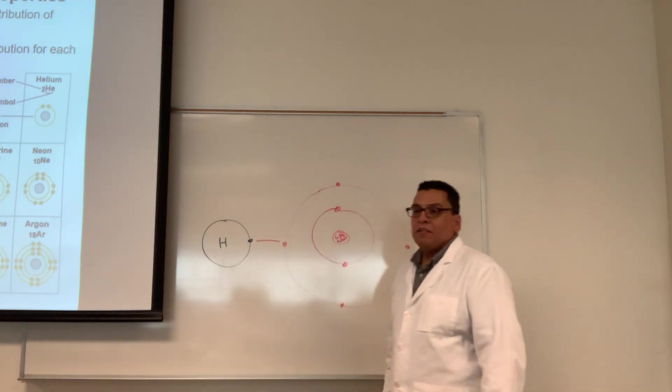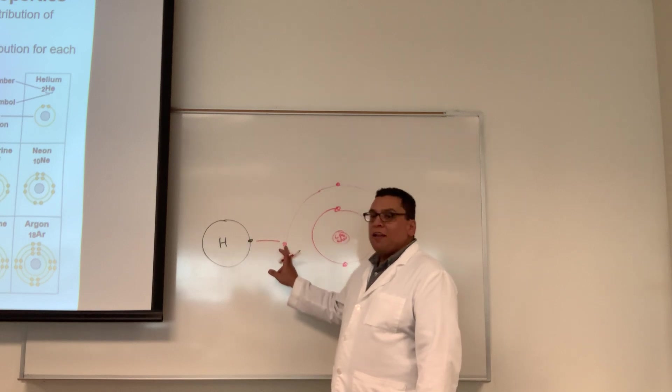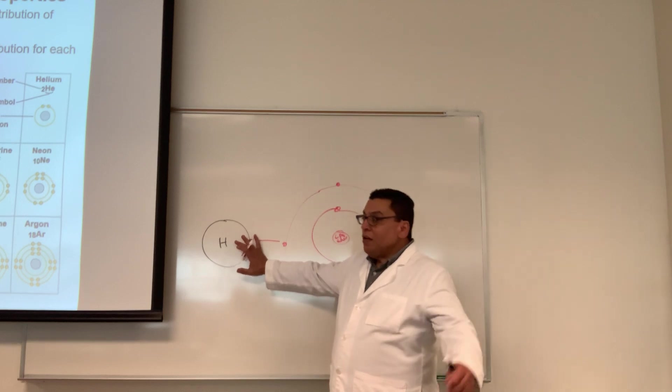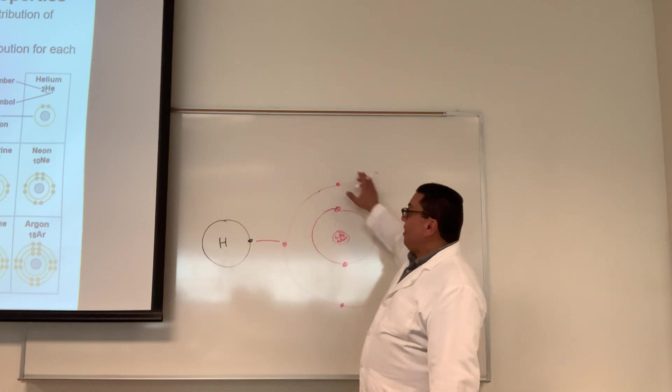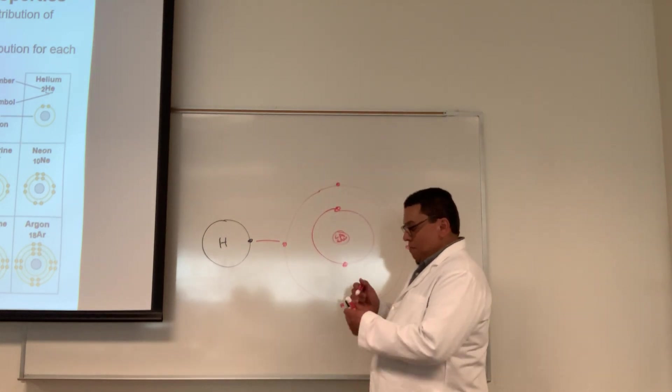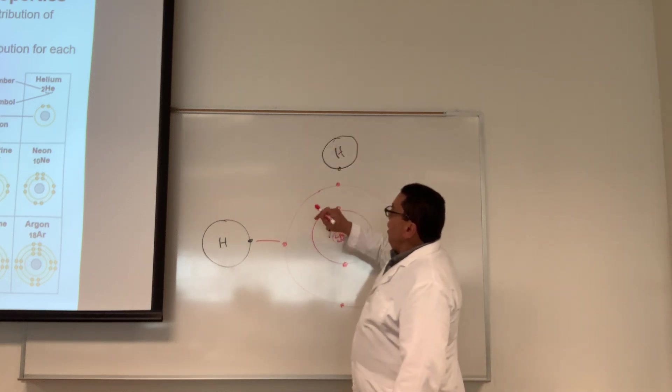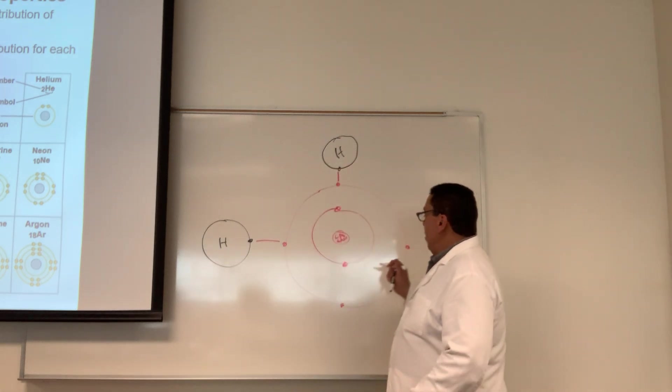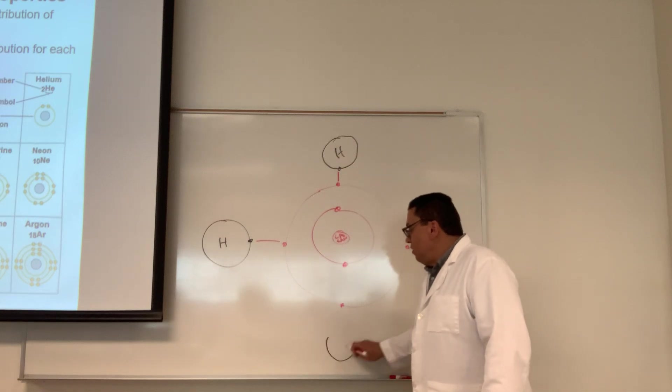This hydrogen is now happy and fulfilled the octet rule. Carbon says, 'If it worked once, I think it's gonna work three more times.' Carbon makes deals with three more hydrogens: you share your electrons, I'll share mine. Bond. Let's do it again. Bond. And then do it again. Another bond.